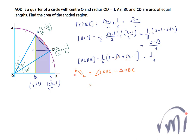The area of sector OBC is (30/360) × π r², where r = 1, so r² = 1. This gives us π/12 for the sector area.